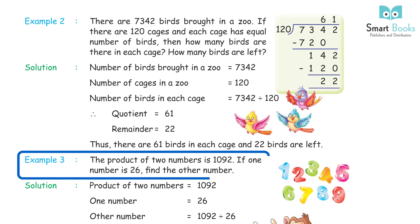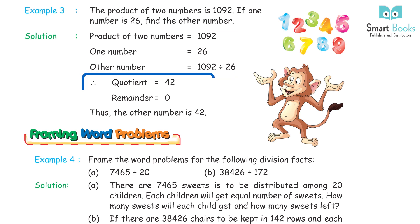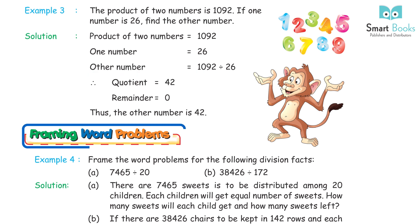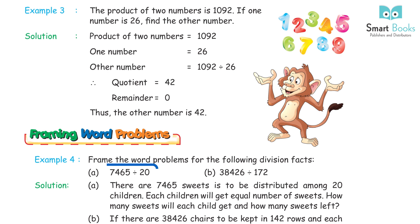Example 3: the product of two numbers is 1092. If one number is 26, find the other number. Solution: other number = 1092 ÷ 26 → quotient 42, remainder 0. Thus, the other number is 42.